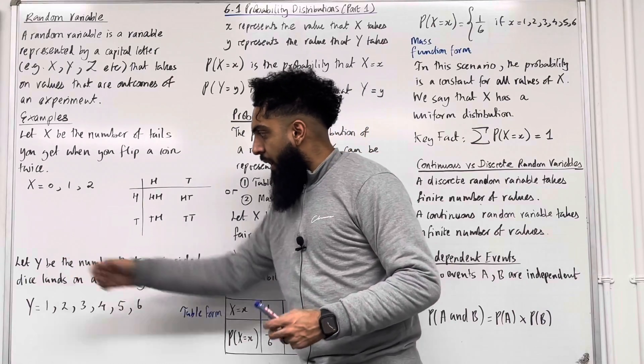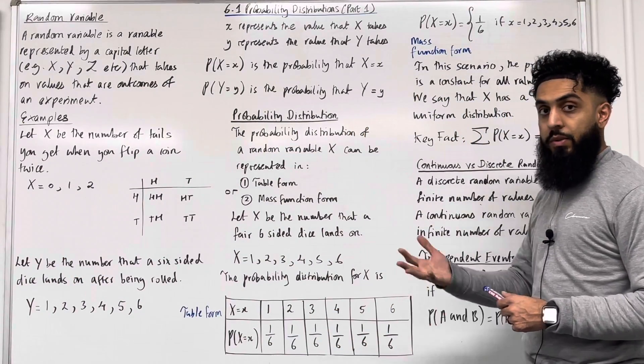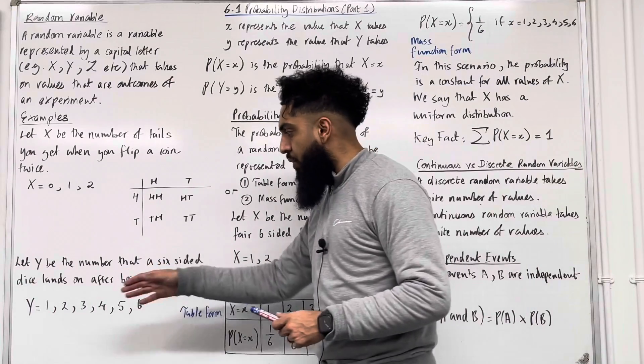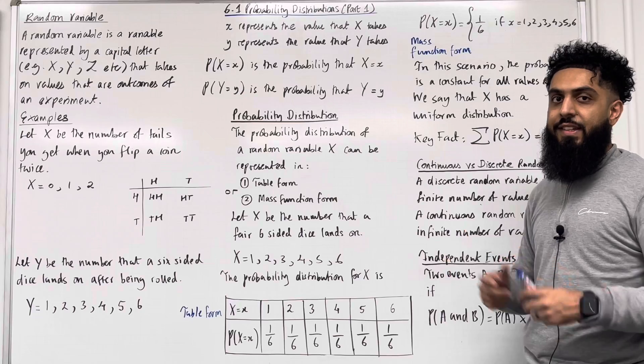Let's have a look at another example. Let capital Y be the number that a 6-sided dice lands on after being rolled. So capital Y takes on the values 1, 2, 3, 4, 5, or 6. These are the numbers that appear on a fair 6-sided dice.